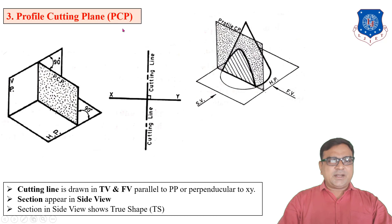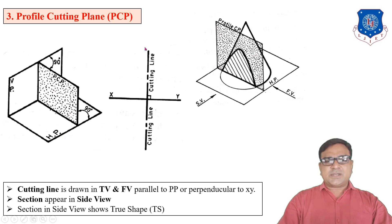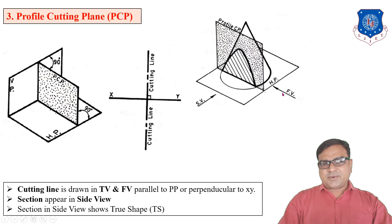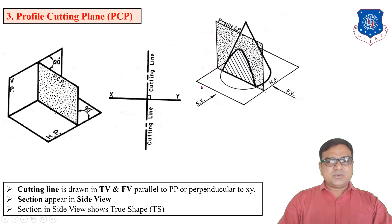The profile cutting plane is perpendicular to VP and perpendicular to HP, meaning it is parallel to the profile plane. When using the profile cutting plane, it appears as a line in both the front view and the top view. The cone is cut and the small part from the left side is removed. In the left-hand side view we get the sectional view, which directly gives the true shape of the section.